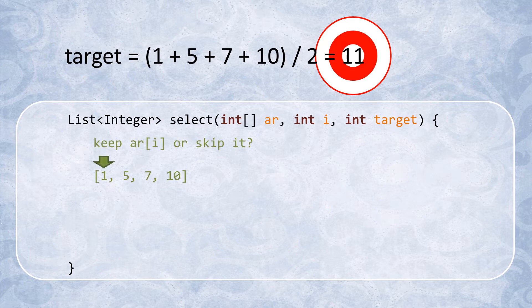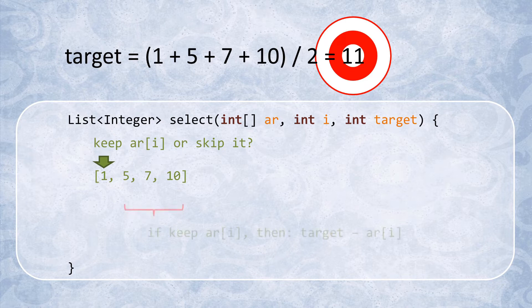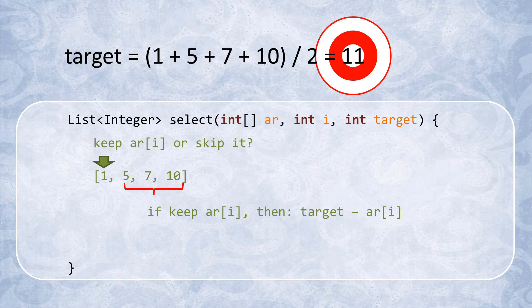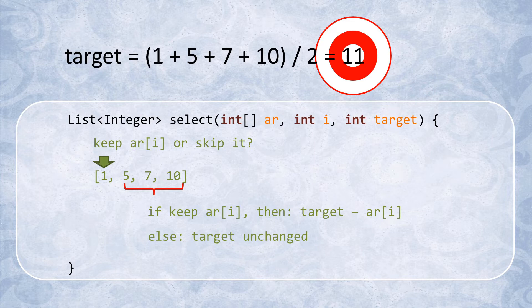The main decision to make is whether to select the value at index i or to skip it. If we were to select it, it would mean that the rest of the array, from index i plus 1 all the way to the end, can be used to select the values that add up to the target minus the value at index i. The other possibility is that we don't select the value at index i, which would mean that the rest of the array could still be used to select the values that add up to the same unchanged target.